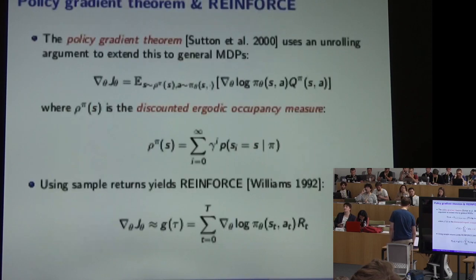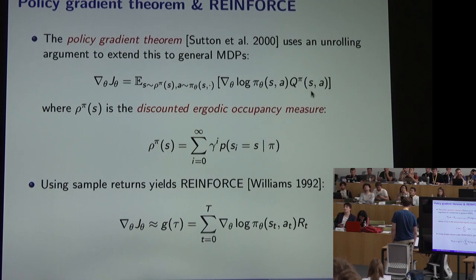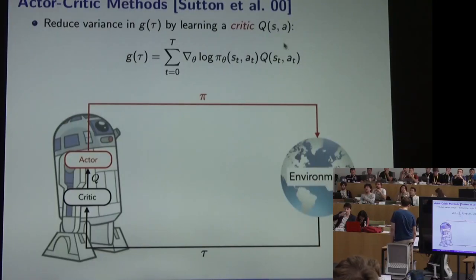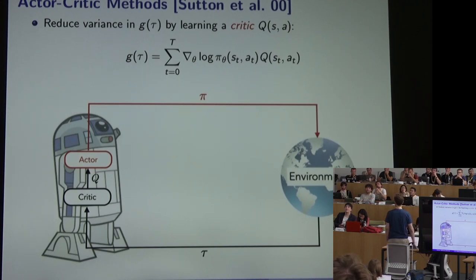In REINFORCE we replace Q-pi with a sample return; in an actor-critic method we replace it with our estimate of the value function as represented by a critic. This critic can be trained using exactly the same temporal difference methods we already saw in previous lectures.